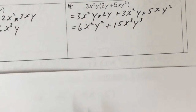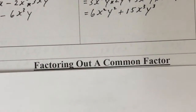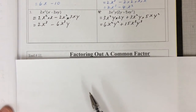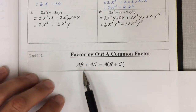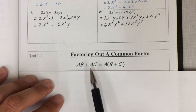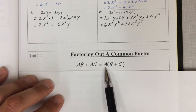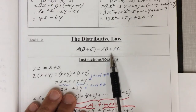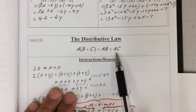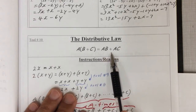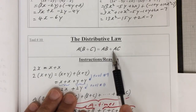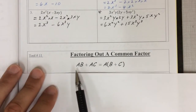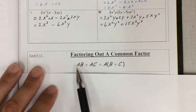This next one is just the reverse of the previous tool. We can look at reversing that process — it's called factoring out a common factor. If you had something that looked like a times b plus a times c, then you know you can write a times b plus c in brackets. That's just the reverse of the distributive law. So factoring means writing something as a product of its factors — numbers that multiply to give you that answer.